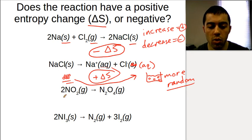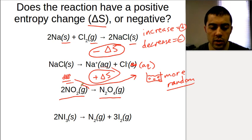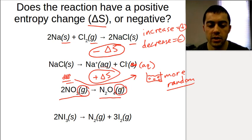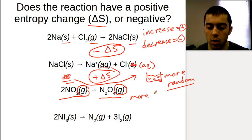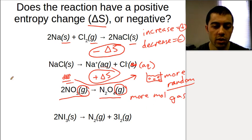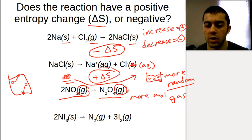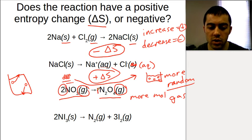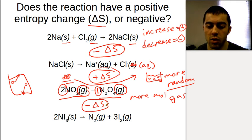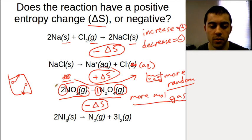For the next example, two moles of NO₂ gas go to one mole of N₂O₄ gas. Since both sides are gas, we can't distinguish by phase — we look at which side has more moles of gas. More moles of gas means more randomness and disorder. Here we have two moles of gas going to one mole of gas, so this is a decrease in entropy — a negative entropy change. Decreasing the moles of gas from two to one results in decreased entropy.